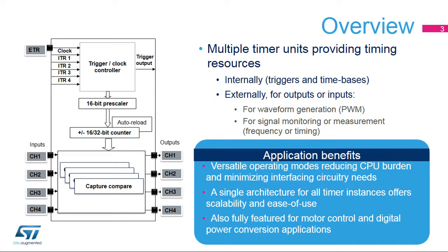Once the capture trigger is issued, the timer's counter is transferred into the capture register and an interrupt or DMA request can be issued. If a new capture occurs before the previous one has been read, the capture register is overwritten, and an overcapture flag is set for the software to manage this condition if needed.